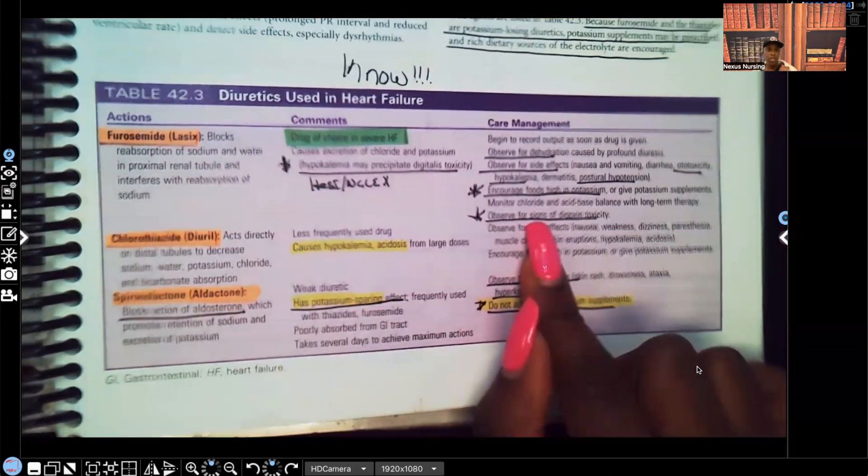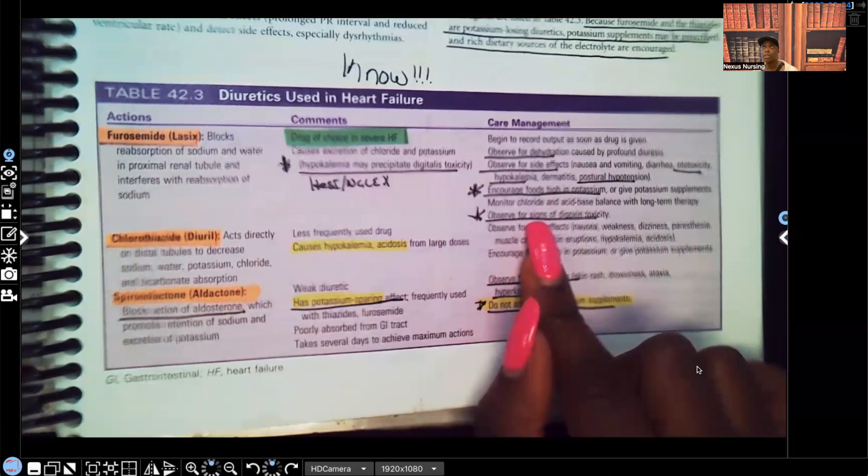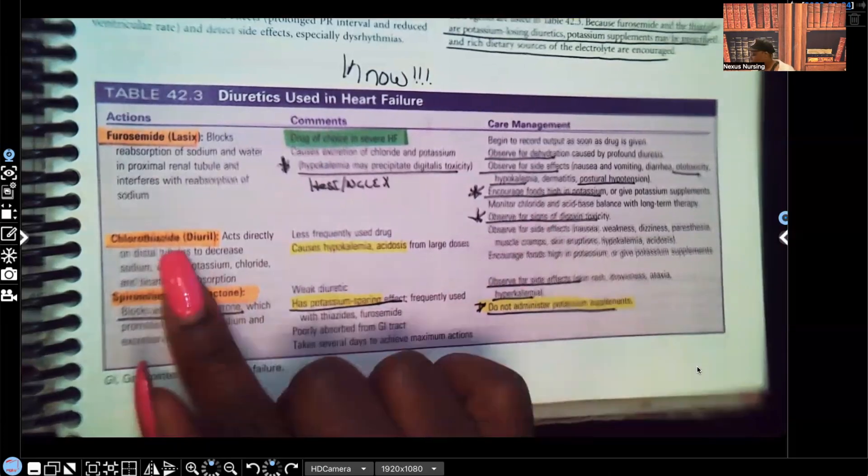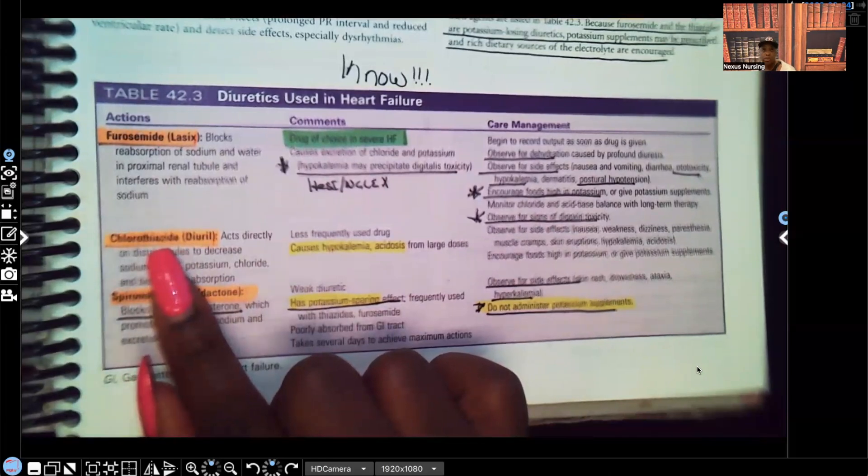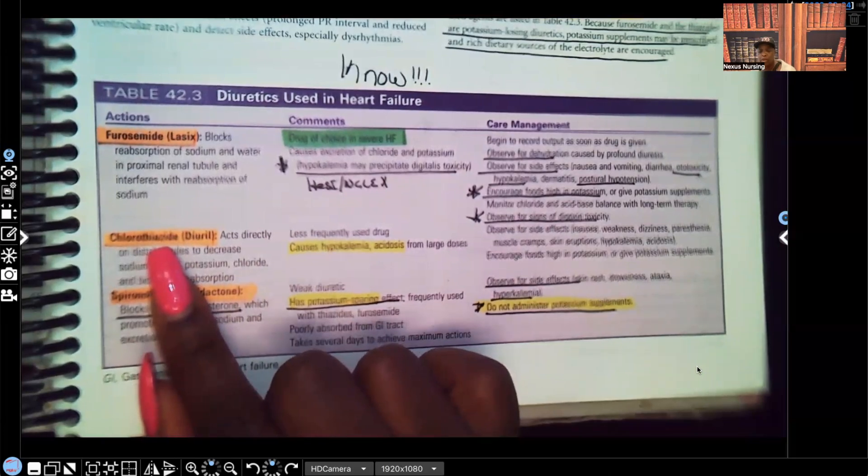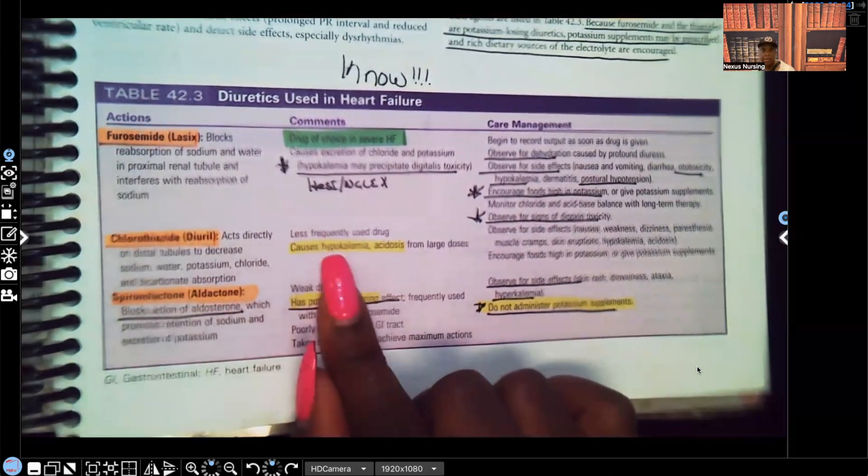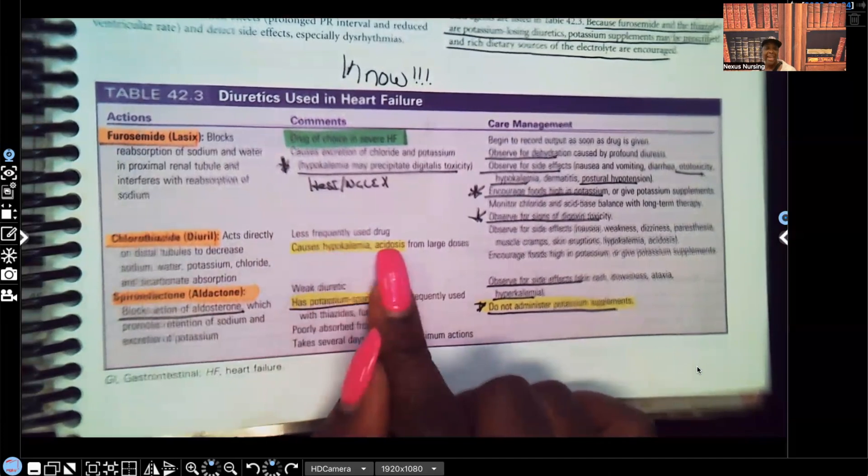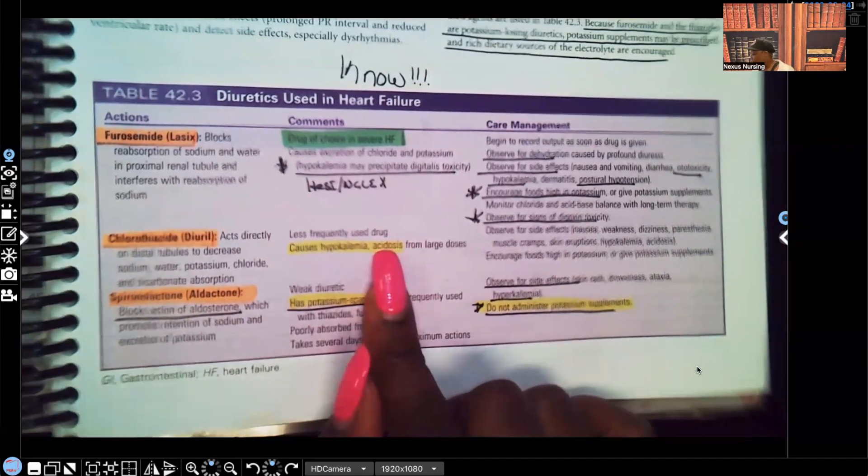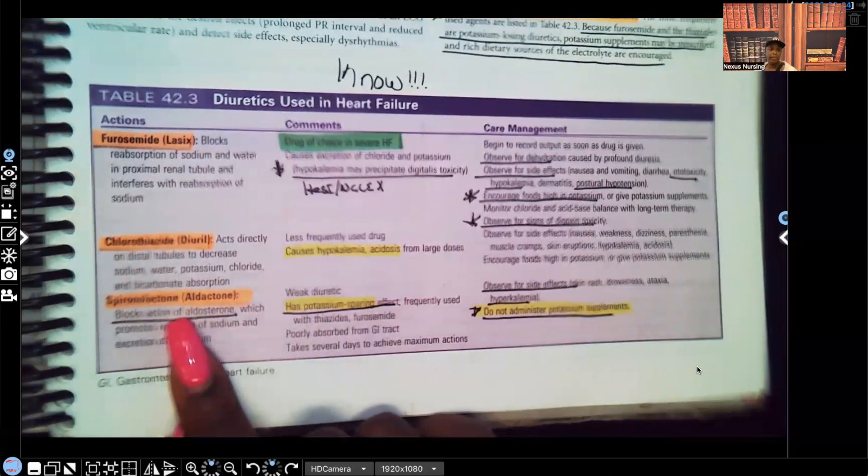Well, let me stop right there because we're talking about furosemide. Now let's move on to Diuril, which is another type of diuretic. It's chlorothiazide. It's used less frequently because remember the drug of choice, the drug we expect to be ordered for this pediatric patient is going to be the furosemide. But Diuril can also be ordered, but you don't expect to see that ordered as much. It's less frequently used, causes hypokalemia and acidosis if given in large amounts. Watch out for that.